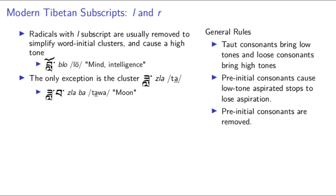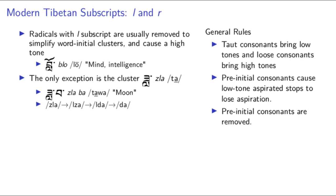There is one exception to the la rule. When la is written as a subscript to the Old Tibetan voiced alveolar fricative za, it was actually likely formally post-initial, so this cluster behaves differently. In modern Tibetan, it is pronounced as a low-tone, unaspirated da. Bayer hypothesizes that the Old Tibetan onset zla went through metathesis to form lza, then the voiced fricative za strengthened to a stop to form lda, and finally the initial la was removed to get the simplified non-cluster da. Note that it often ends up being pre-nasalized after certain consonants too, which makes sense given this proposed path.